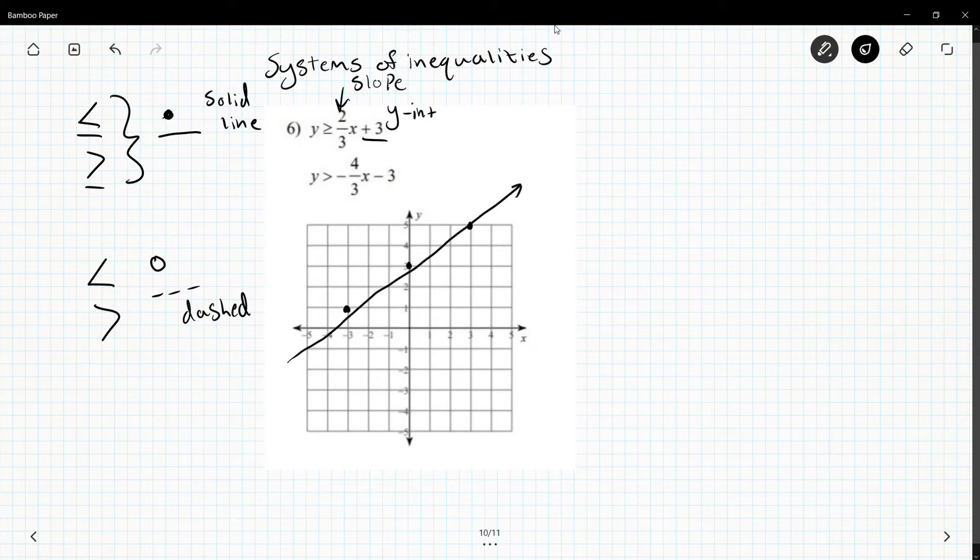And the other one is y is greater than negative four-thirds x minus three. So I have negative three and negative four-thirds. It doesn't look like I can go down four so I'm going to go up four one two three four and to the left three one two three. So they share a common point and this is a dashed line.